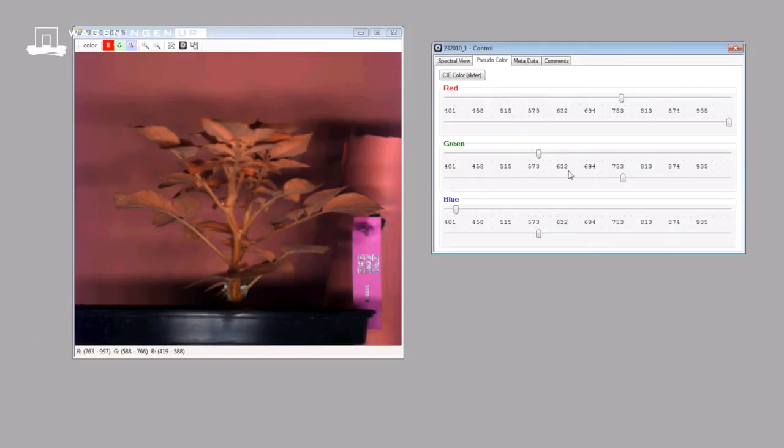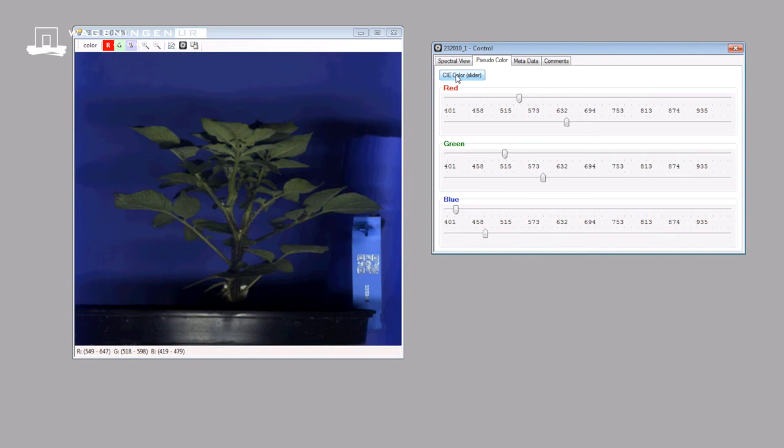A pseudo-color image can be displayed by mapping parts of the wavelength range to the red, green, and blue channels. This way, spectral differences can be visually enhanced.